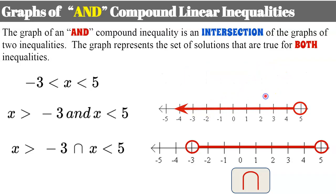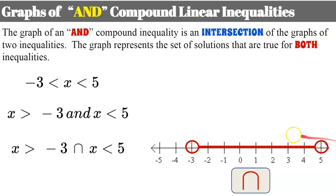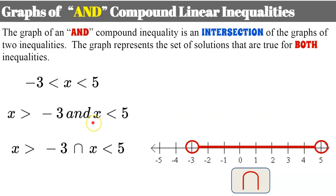So the compound inequality's graph begins with an open circle at negative 3, stops with an open circle at 5, and we shade everything in between. The portions outside that range were true for the individual inequalities but are not true for the compound inequality. Whenever you have a compound inequality with AND, it's an intersection — not all solutions of x greater than negative 3 or all solutions of x less than 5, but only the solutions true for both.